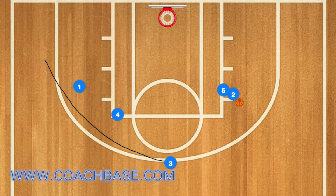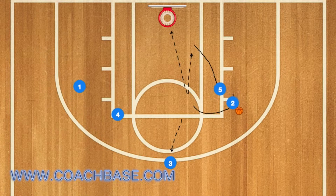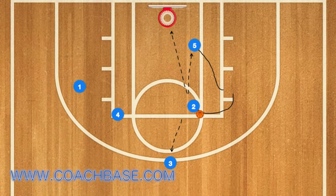Three will use one and four as a screen, and five will hand off the ball to player two. Two will use five as a screen, and at this point two can either pass to three or five, shoot the ball, or drive to the rim himself.